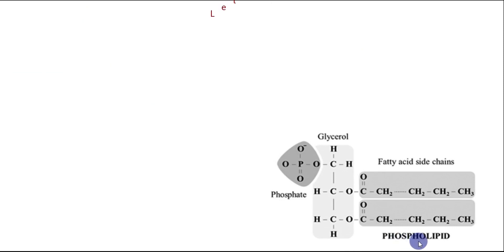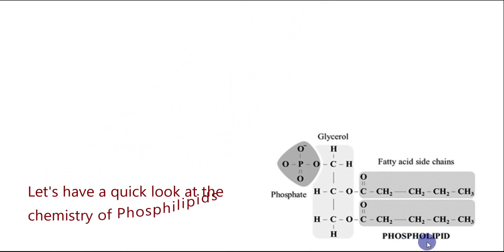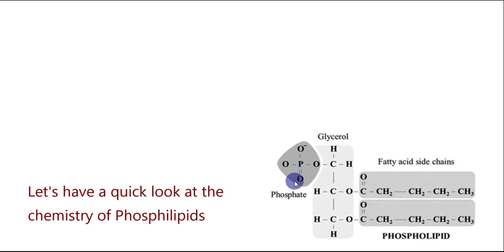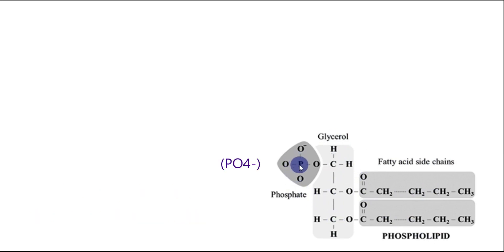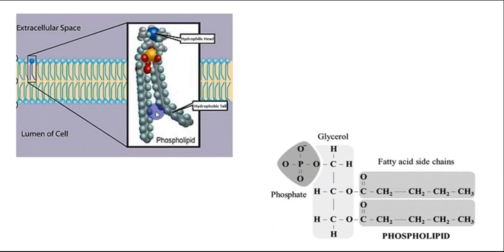Phospholipids are literally fatty chains or lipids attached to glycerol — fatty acid side chains attached to glycerol which also have a phosphate entity attached. These are the fatty acid side chains. The cell membrane is a bilayer: this is one layer, this is the second layer. So two monolayers make a bilayer.